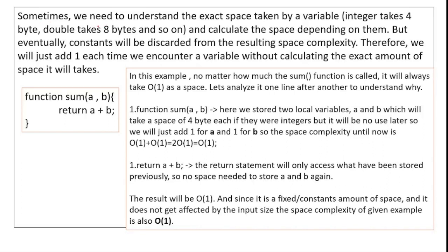To understand the rules, sometimes we need to know the exact space taken by a variable. You have 4 bytes for int, 8 bytes for double, and different data types take different amounts of memory. However, constants will eventually be discarded from the resulting space complexity, so we simply add one each time we encounter a variable, without calculating the exact byte size.